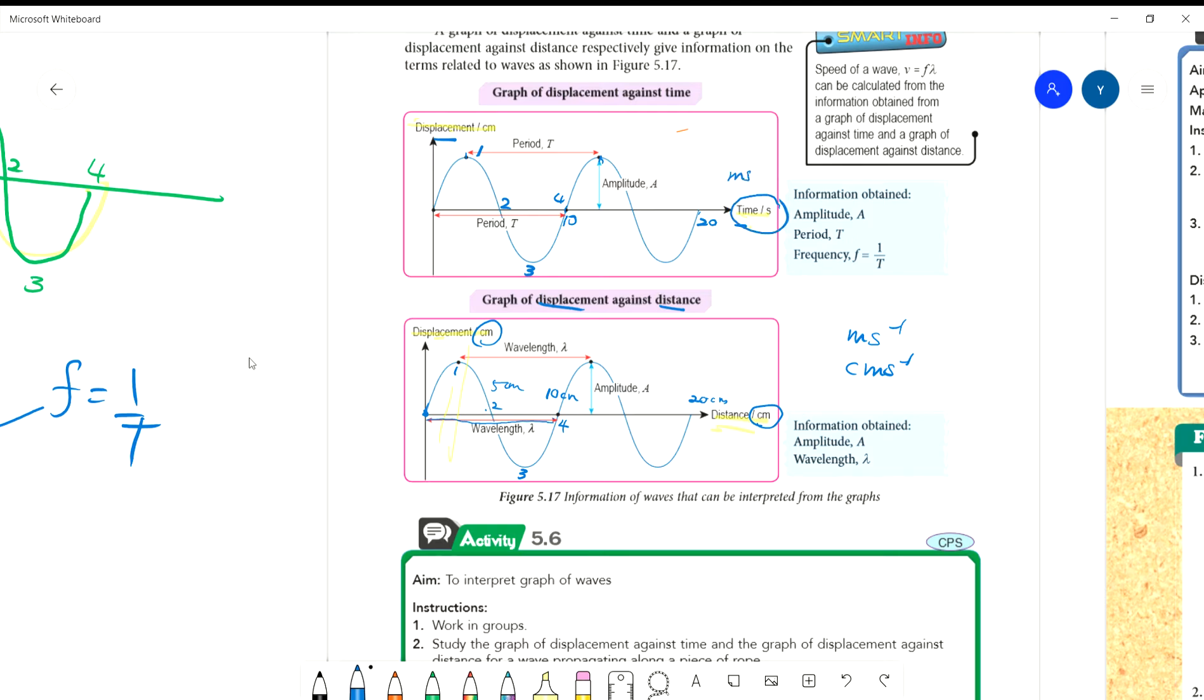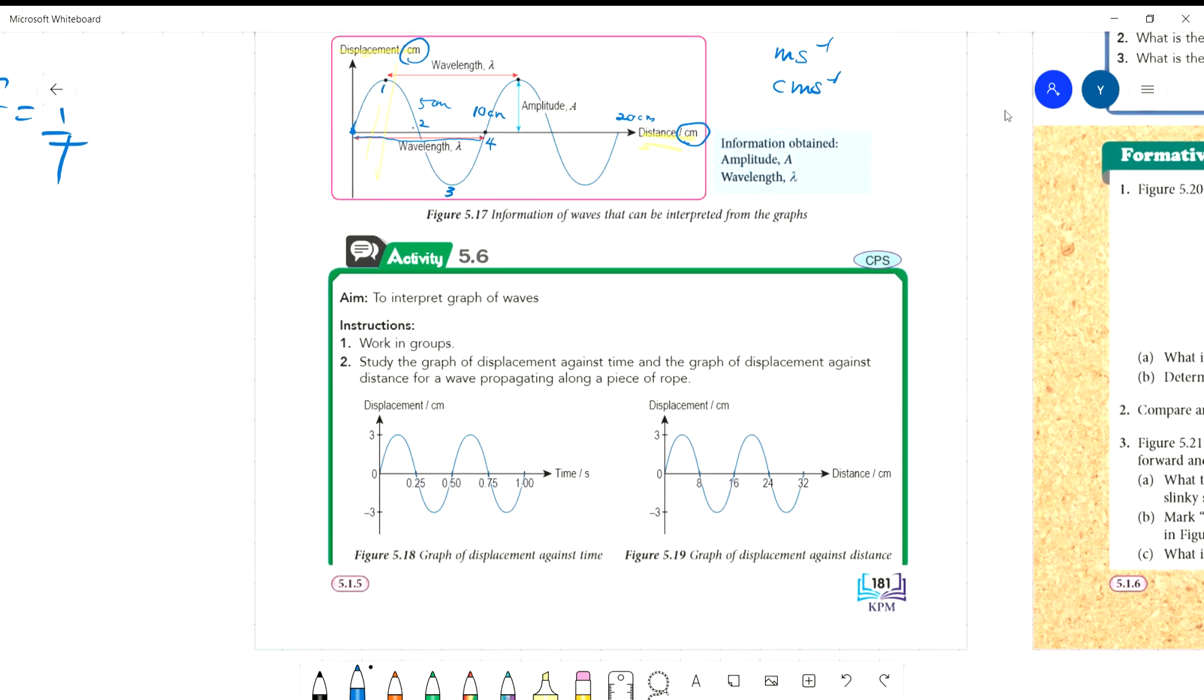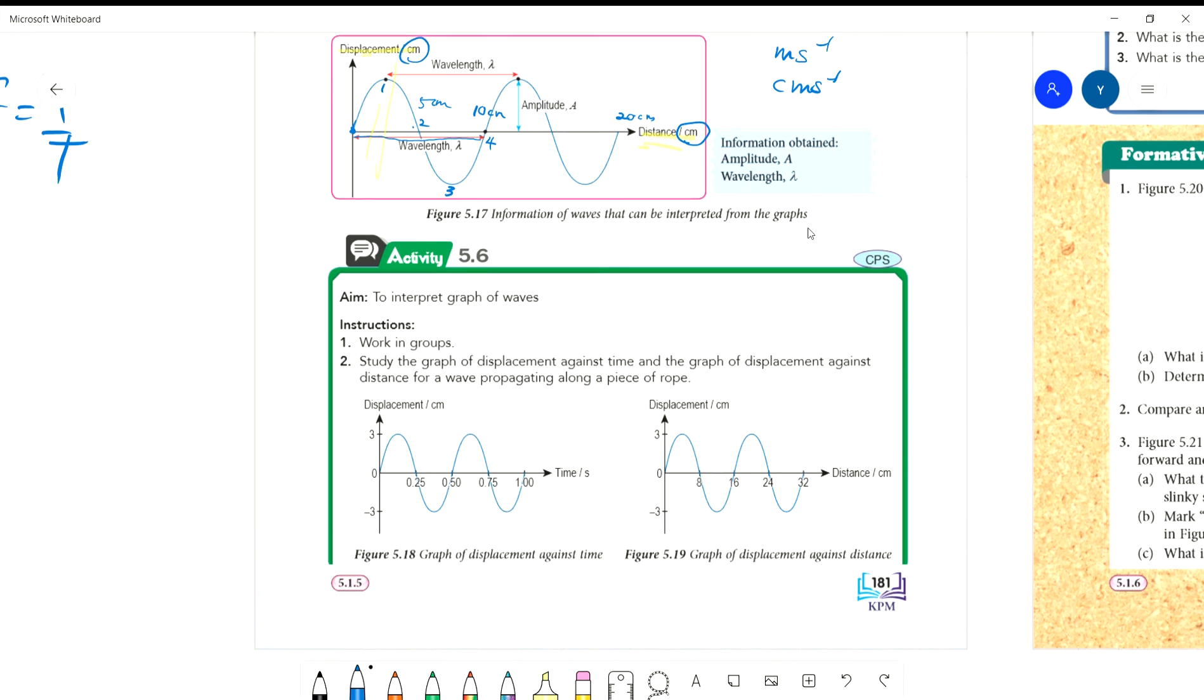From the analysis of the graph, we can calculate many things. You can calculate the particle's speed, its energy at different positions. But that's not our level - wait until you upgrade to form 6 or matriculation, then we'll discuss that. Now let's look at this question and interpret it.